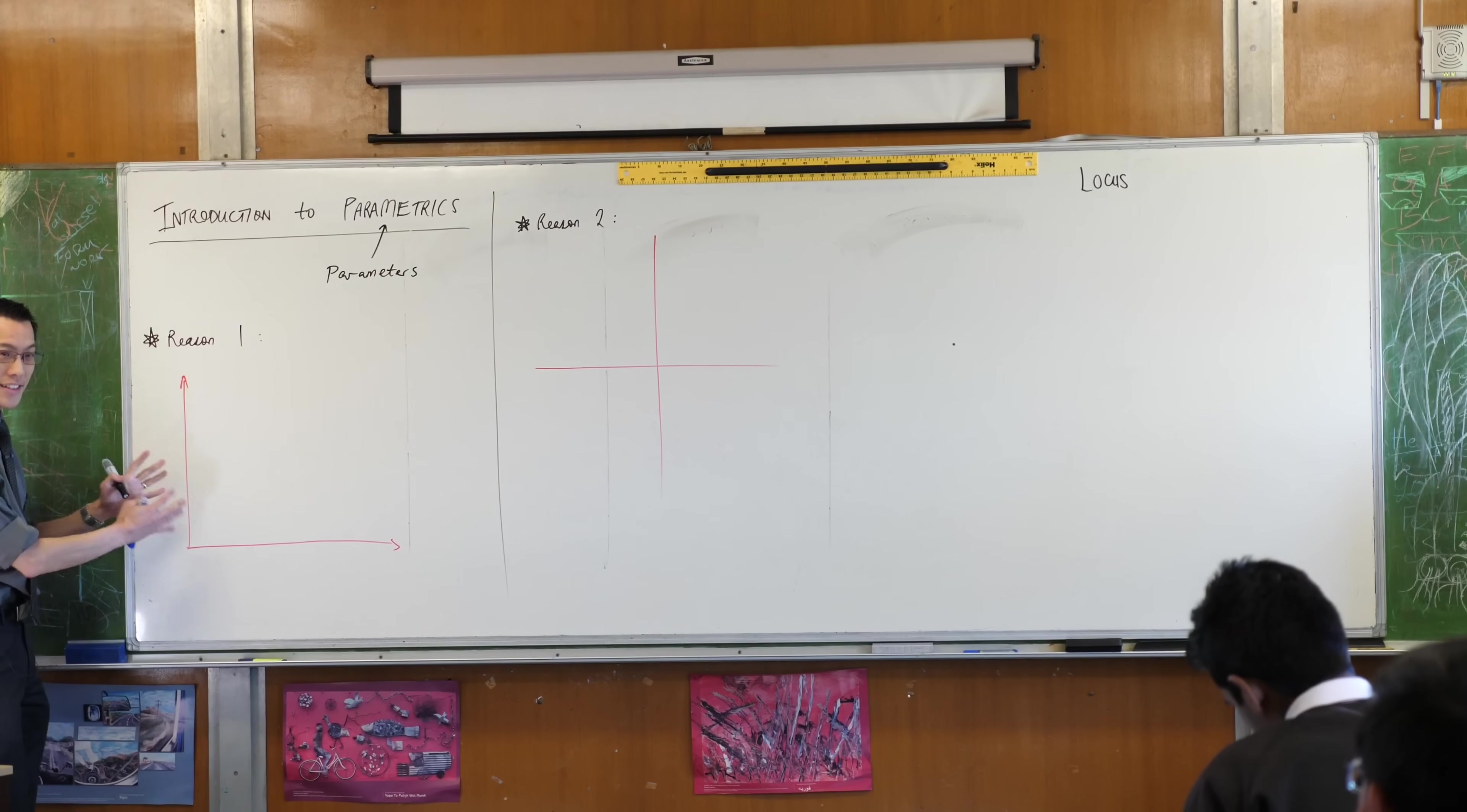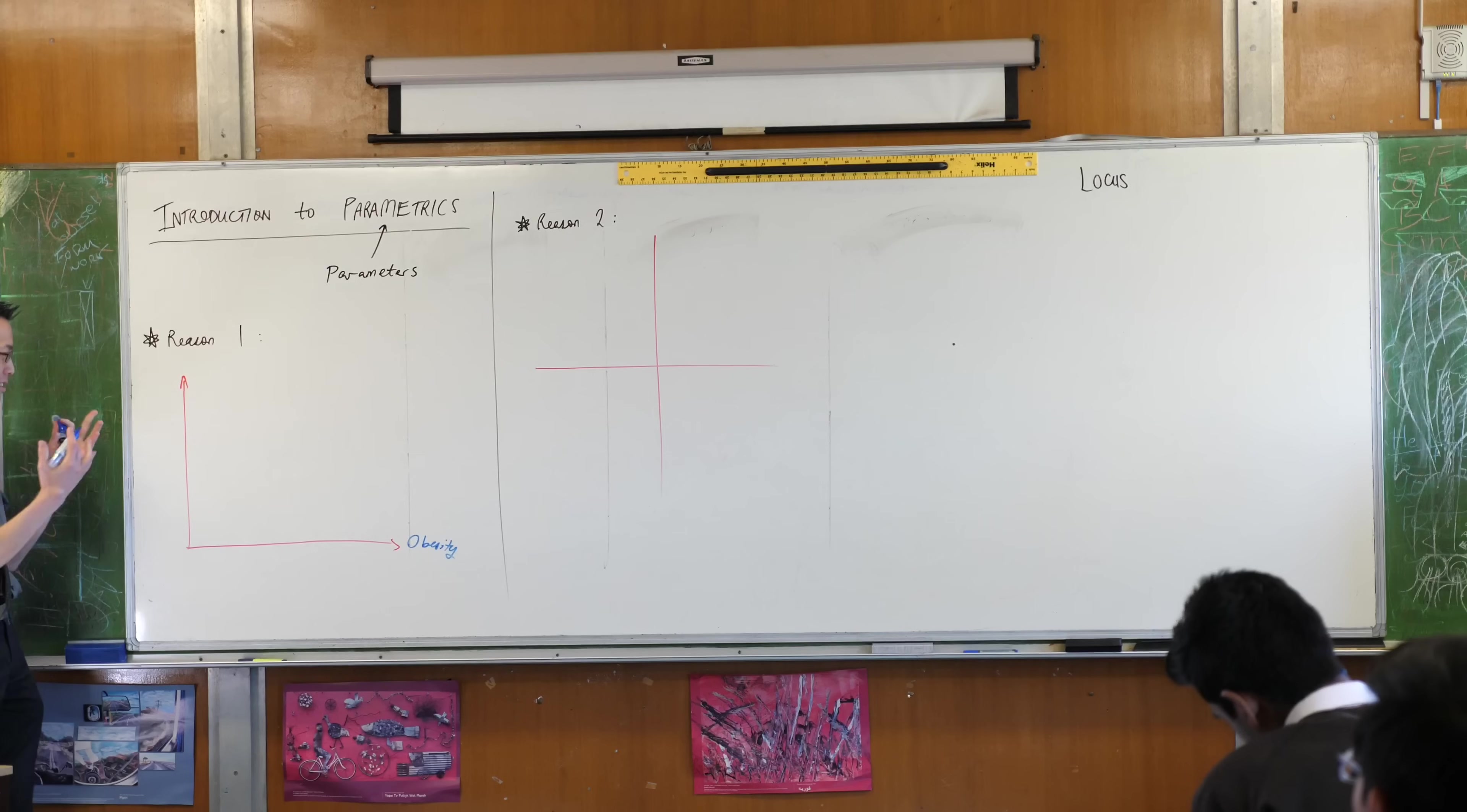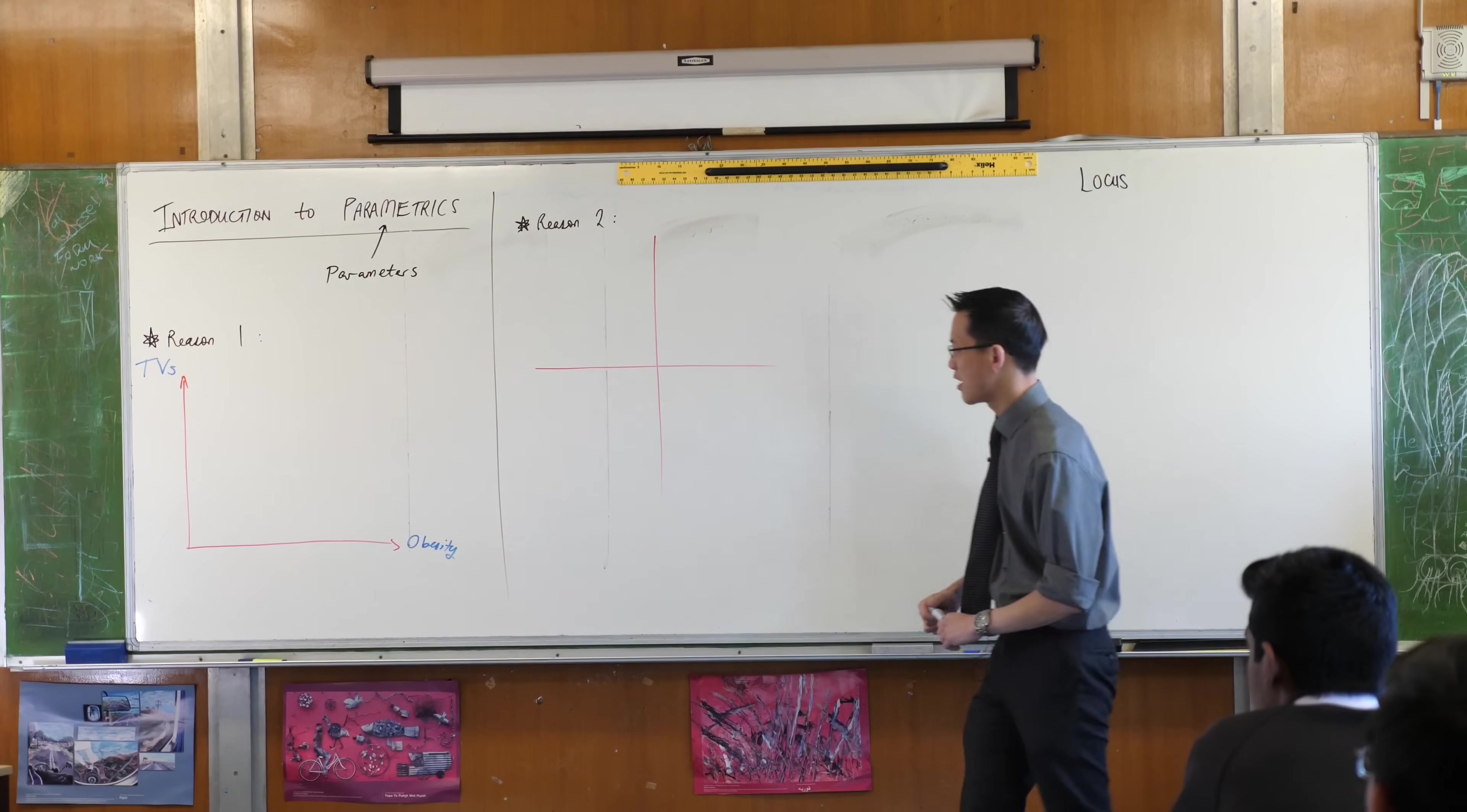Suppose you wanted to graph two quantities against each other in different countries. You wanted to graph obesity rates against numbers of TVs in households. What would this graph look like?